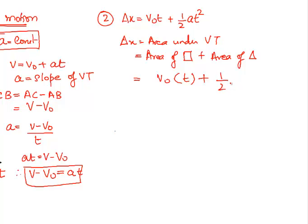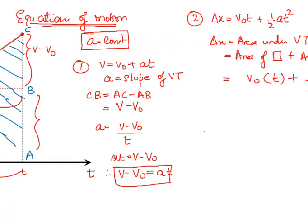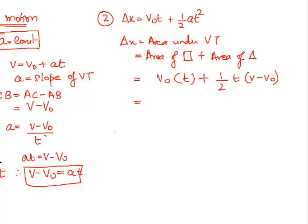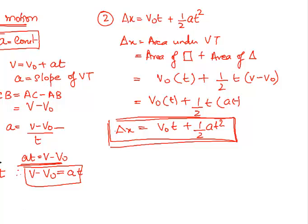And area of triangle is half into base into height. We already have the base and we already have the height there. And now, I am going to get rid of this V minus V0. And the way I am going to do that is I am going to use this equation over here. And V minus V0 is at. And we have our second equation that is half at square. Two down. One more to go.